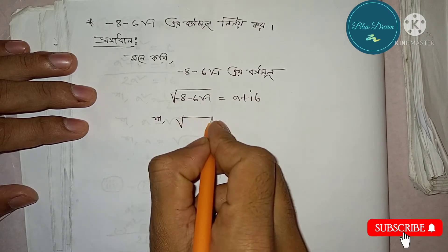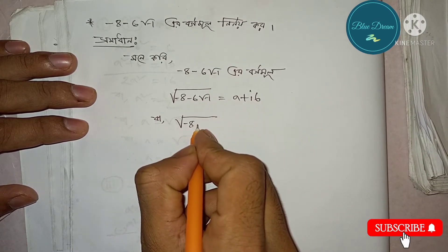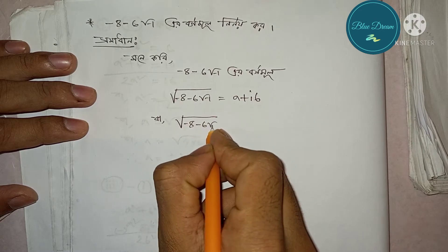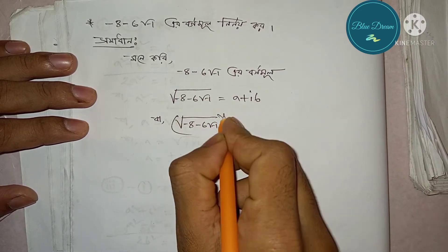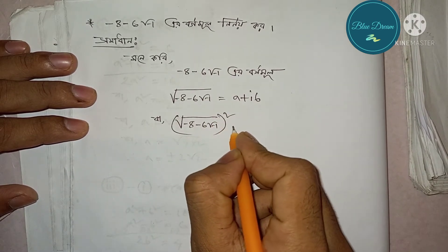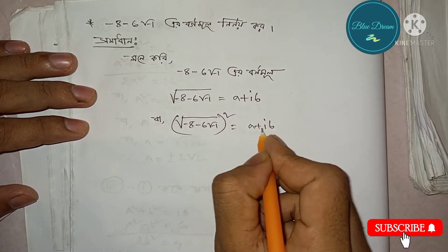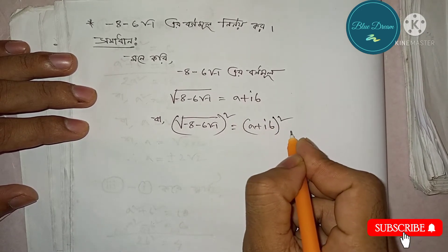Root over (minus 8 minus 6 root over minus 1), squared, is equal to (a plus ib) whole square.